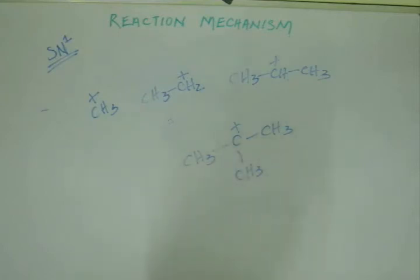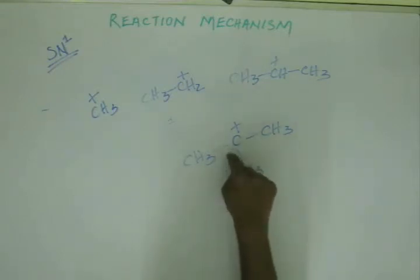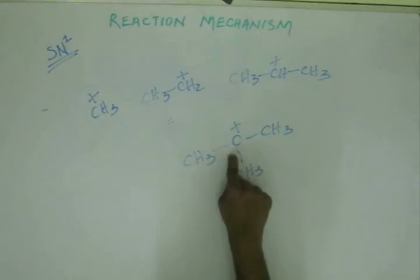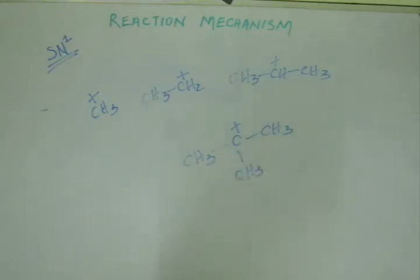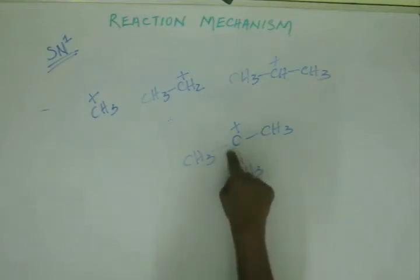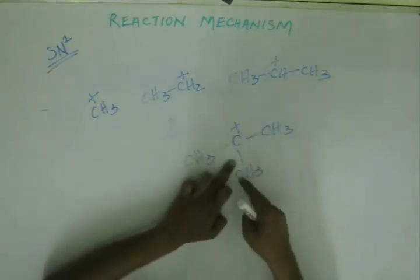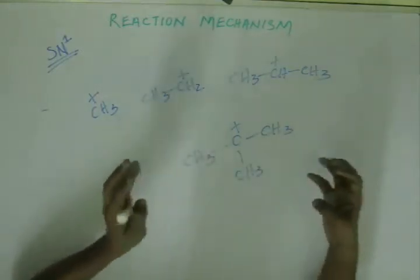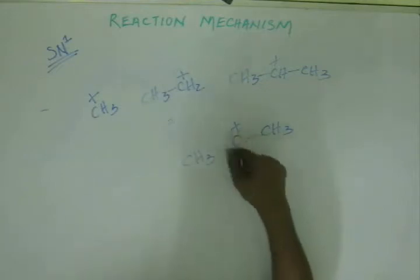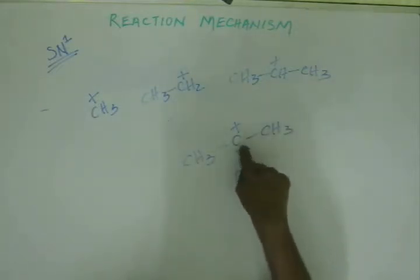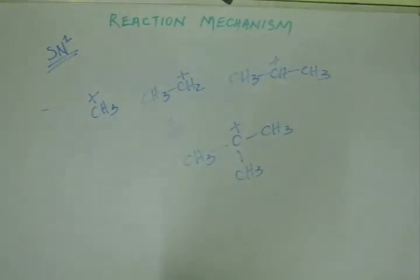As a general rule of thumb, as the degree of carbon increases, the rate of SN1 reaction also increases. In SN2, increased degree was a hindrance because methyl groups blocked the incoming nucleophile from putting its electrons into the antibonding orbital. In SN1, this is not a hindrance — the methyl groups are actually stabilizing the positive charge on the carbocation, so higher degree is helpful in SN1.